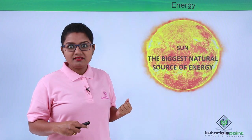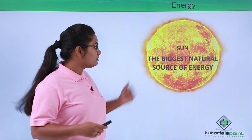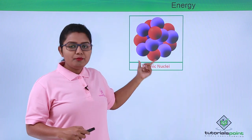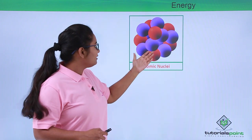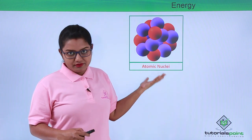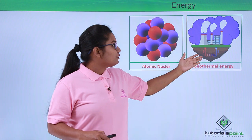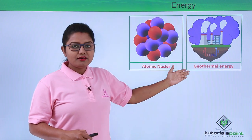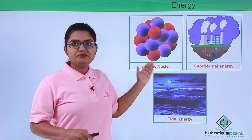There are so many other forms of energy that we use. For example, the energy that we get from the atomic nuclei by separating the nucleons is what we call nuclear energy. Another example is geothermal energy, which is derived from the interior of the Earth, and tidal energy, which we get from the high and low tides.